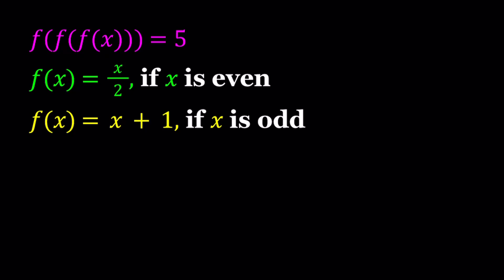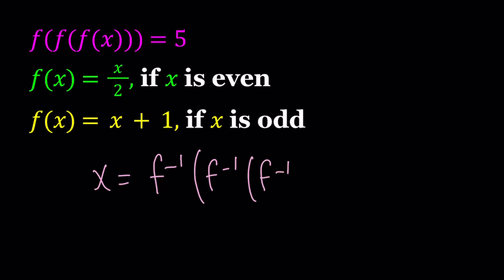We need to go backwards. If you apply f inverse on the left three times, f is going to cancel out. So that tells us that x can be written as f inverse of f inverse of f inverse of 5.